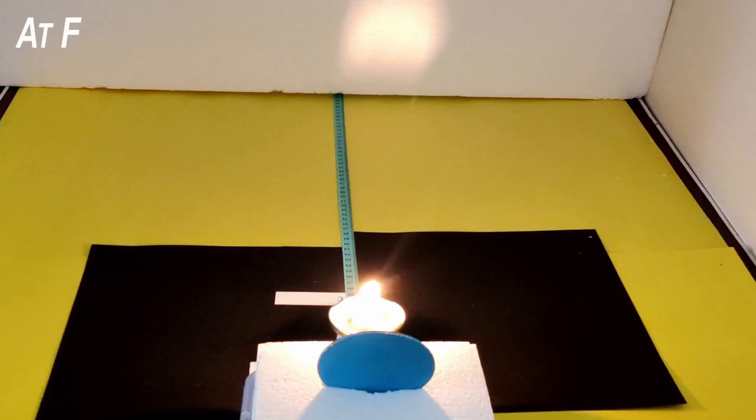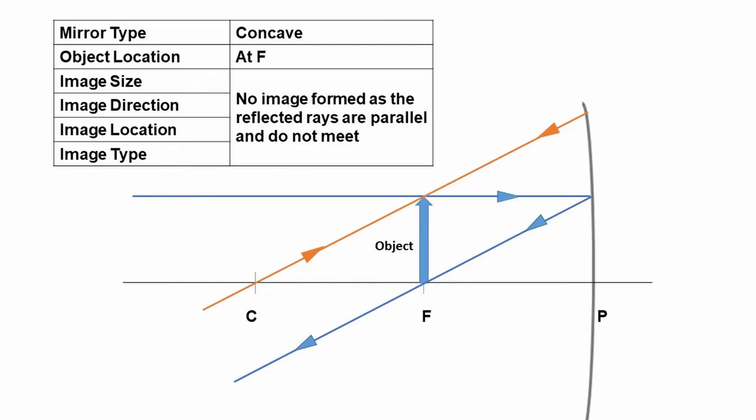Now place the candle at the focus point F. Move the screen away from the mirror towards point C and beyond until a clear image is formed. You will notice there is no clear image formed when the object is placed at point F. This is because when the candle is placed at F, the blue line and the orange line, after getting reflected off the mirror, travel parallel to each other and never meet. As these two rays don't meet, no image is formed.